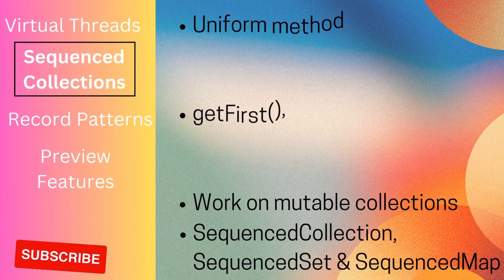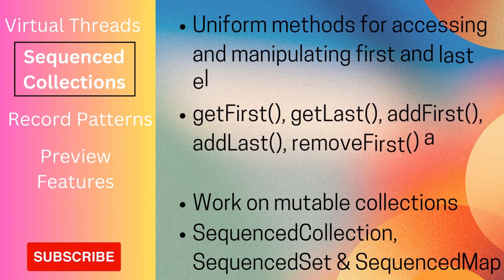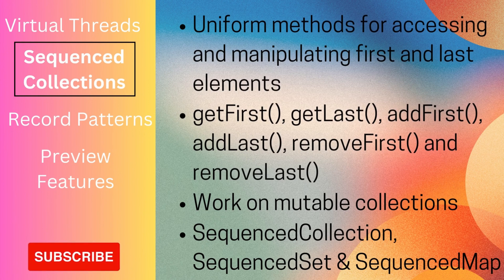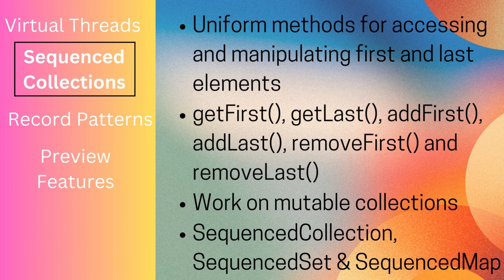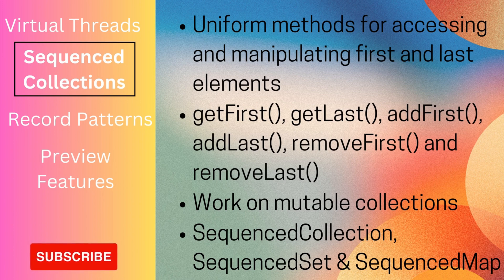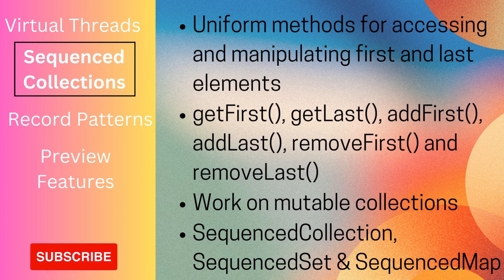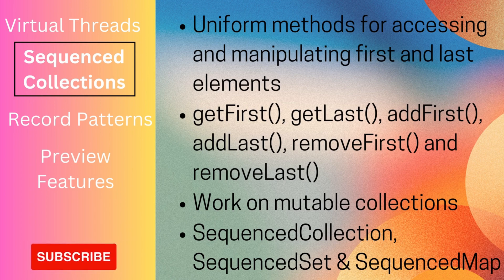The next feature is sequenced collection interfaces, introduced to enable uniform methods for accessing and manipulating first and last elements of a list. In Java 21, the sequenced collection interface will be introduced and will be applicable to lists, sorted sets, and linked hash sets. It has methods such as getFirst, getLast, addFirst, addLast, removeFirst, and removeLast. This works only on mutable collections; for immutable collections it will throw an UnsupportedOperationException. Similar interfaces — sequenced set and sequenced map — are also available.